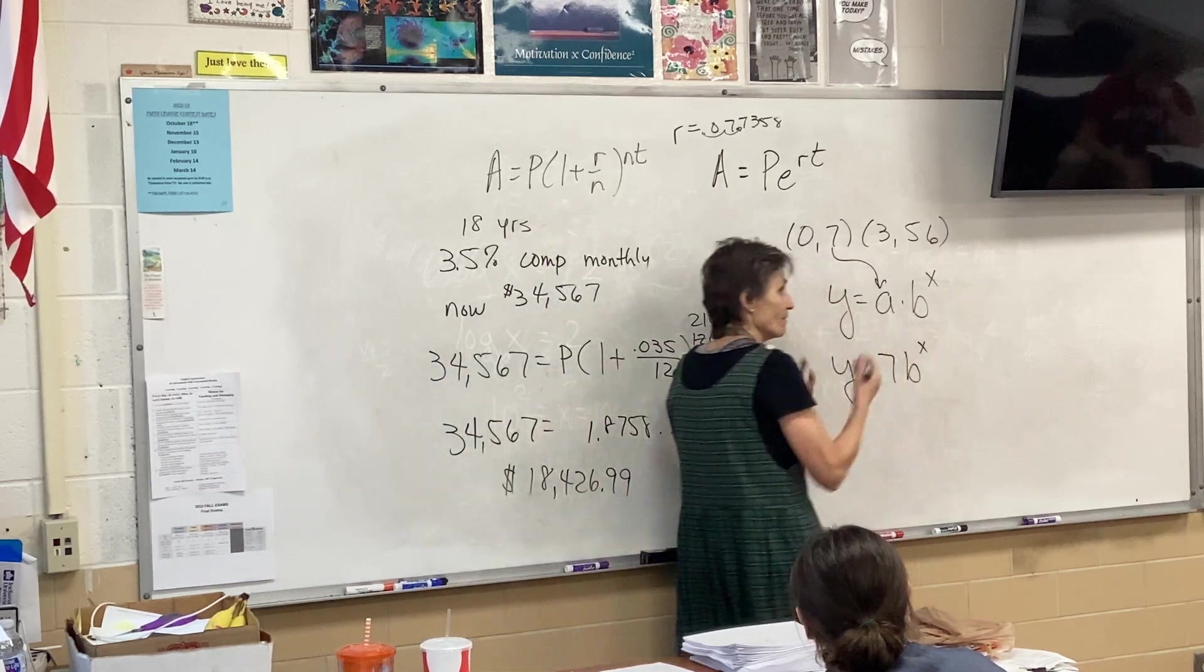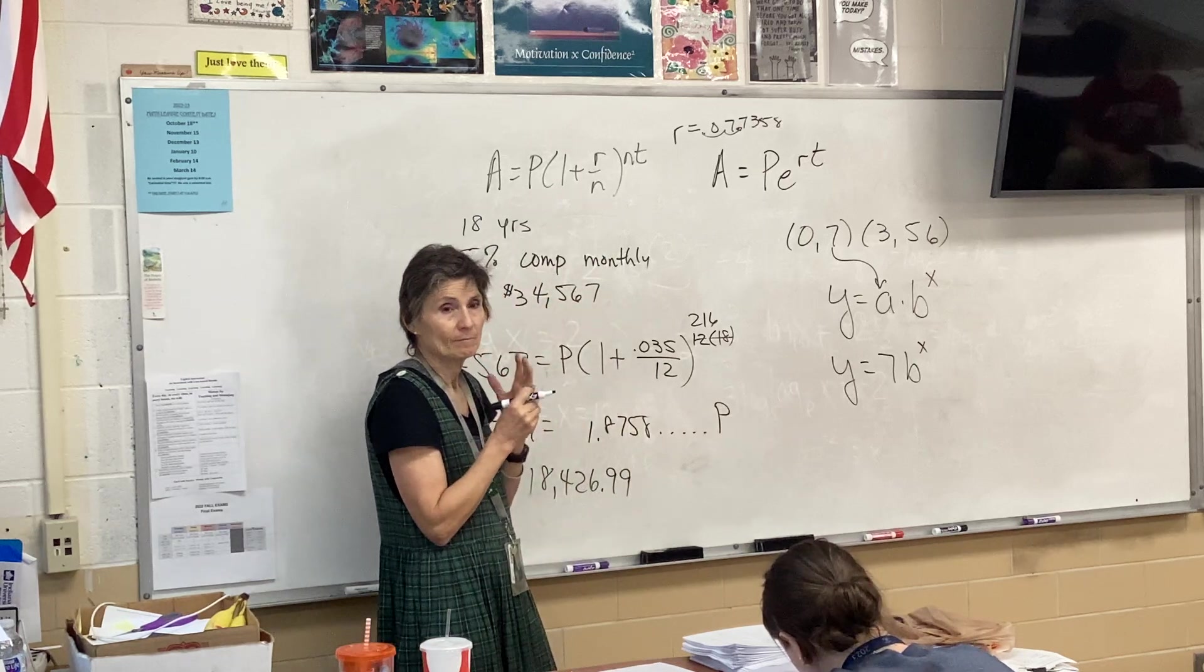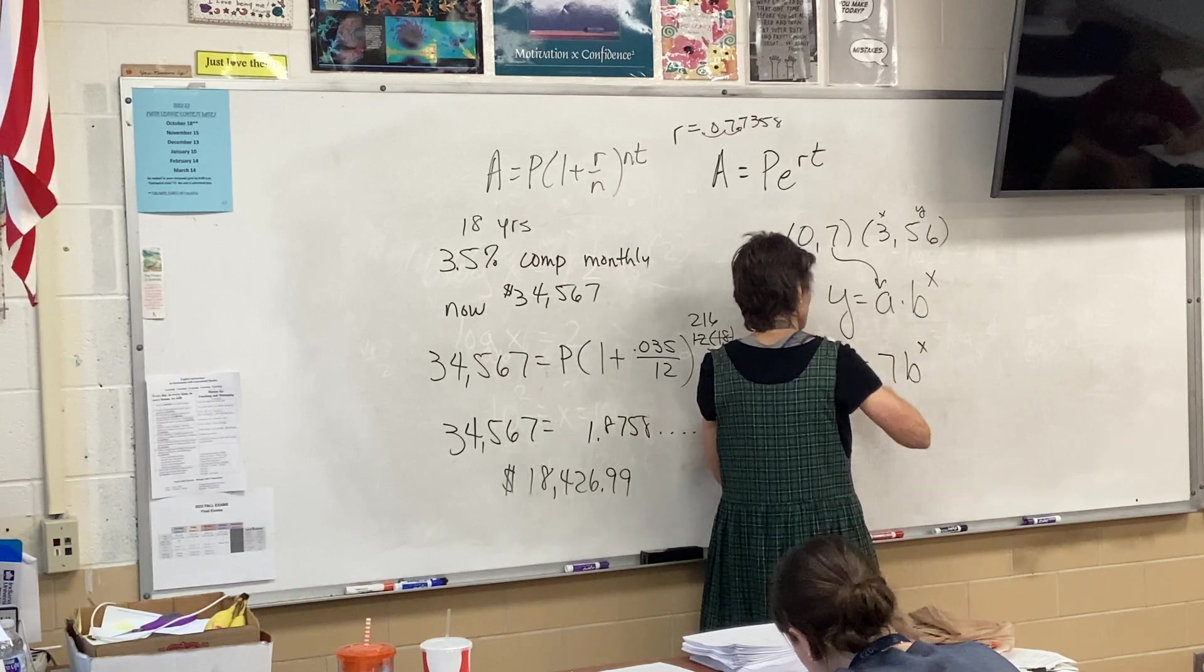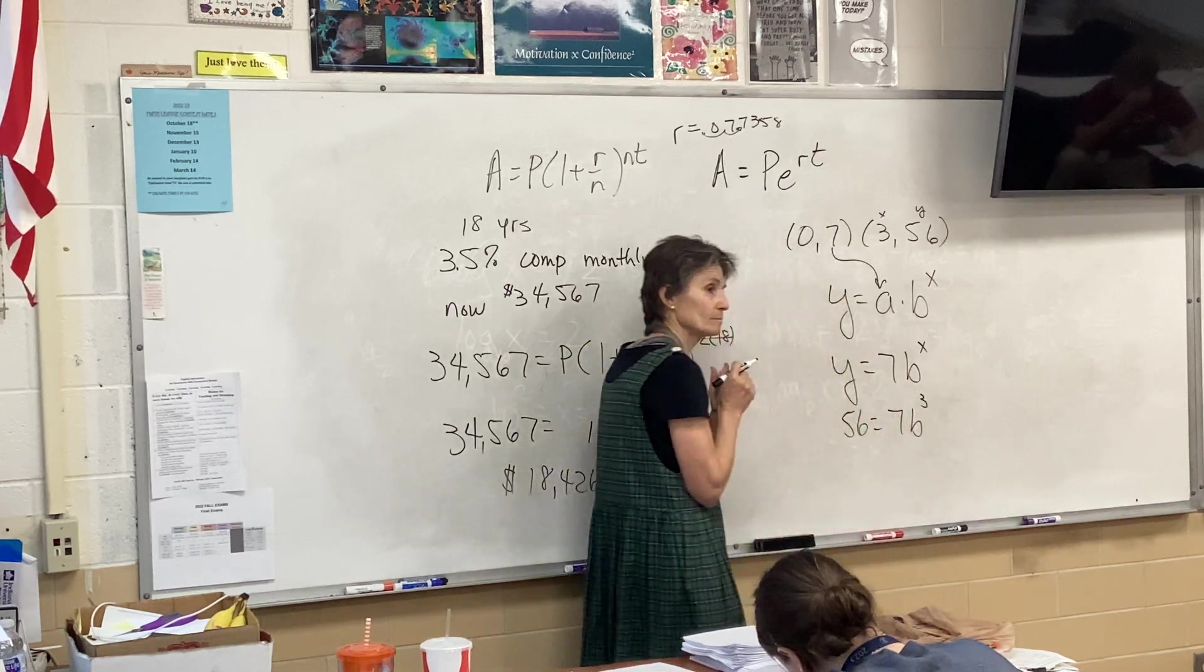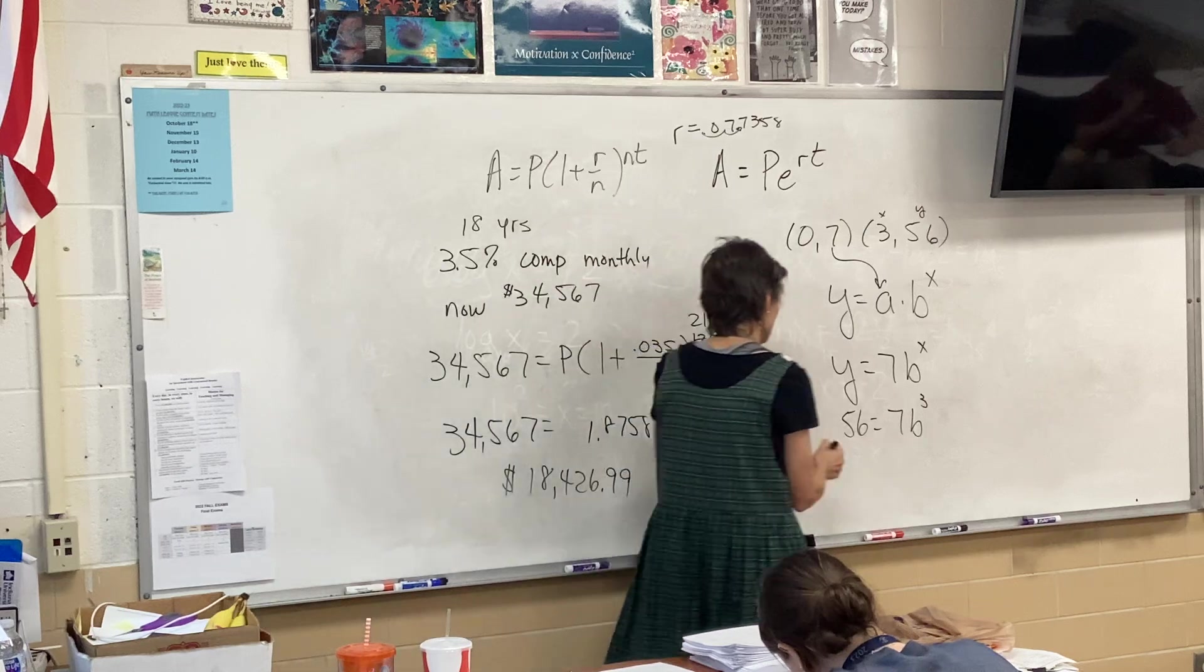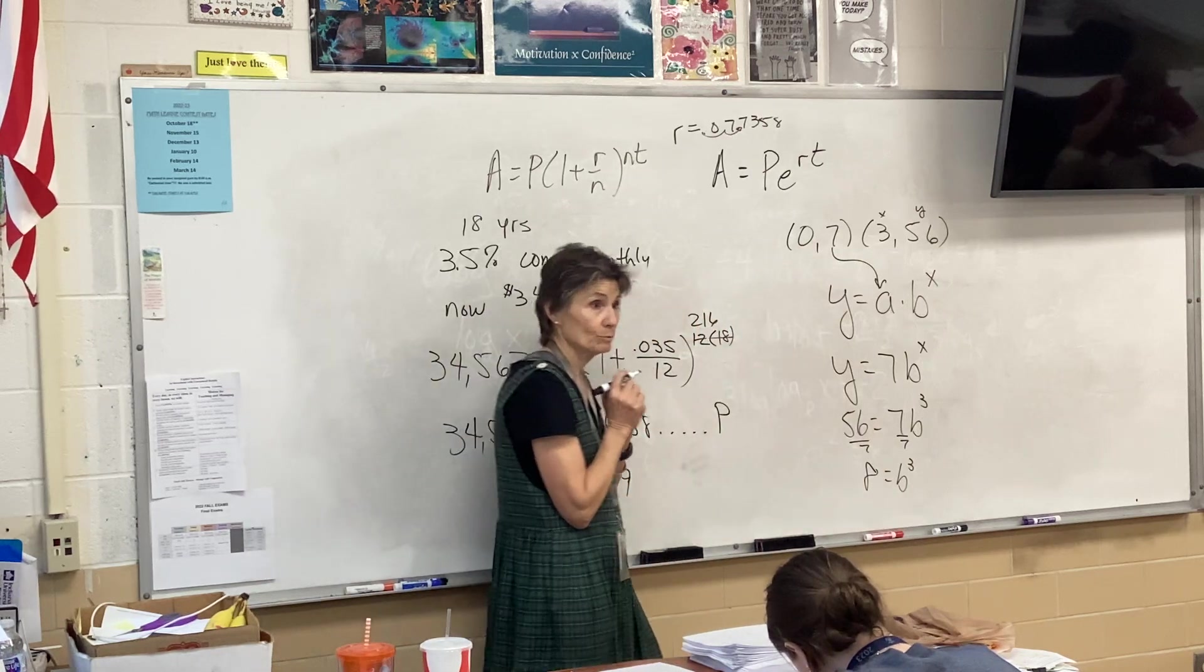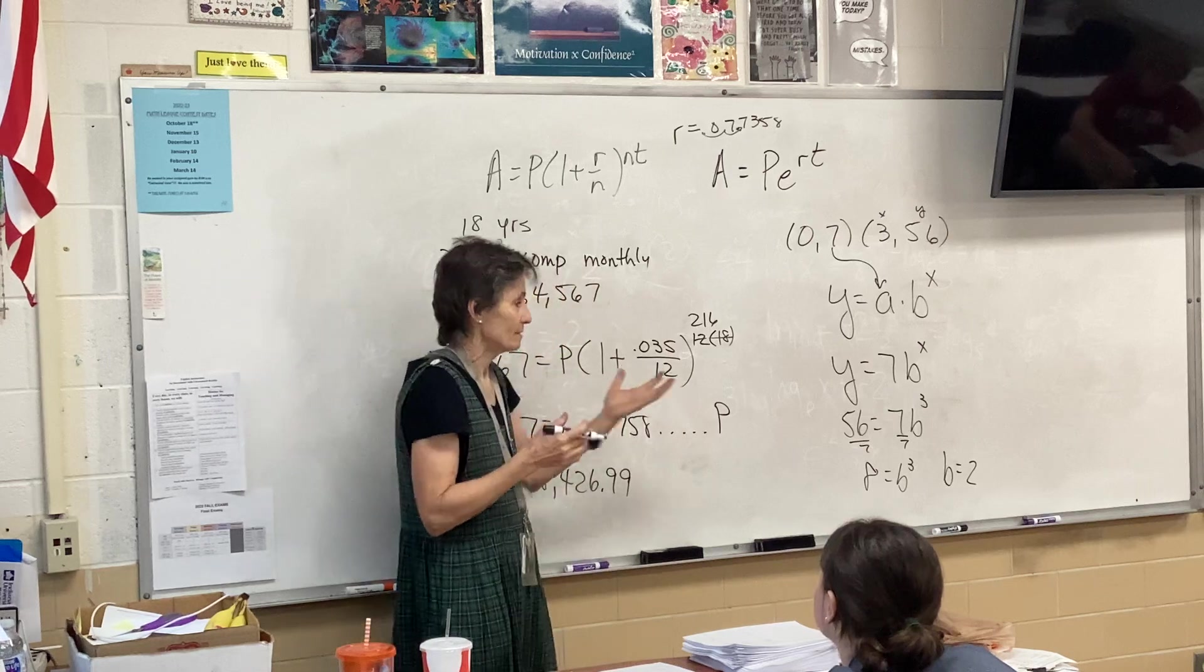Now, how do I find B? Take the other point, which is an X and a Y, and plug it in the appropriate spot in my equation right here. So 56 equals 7B cubed. This is no calculator, so what are you going to do? Divide by 7. So 8 equals B cubed. So B must be 2. Now, if it's no calculator, guys, I've got to keep the numbers reasonable, so don't worry about that. Do that work.